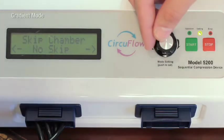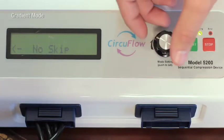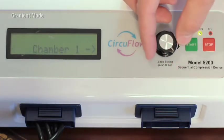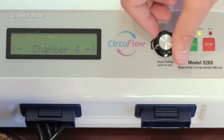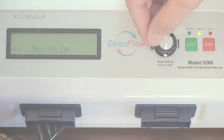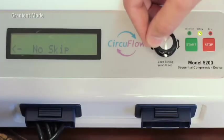To skip pressure in a chamber, turn the shuttle knob to the right until you reach skip chamber and press the shuttle knob to select. Select the chamber you wish to skip by turning the shuttle knob to the left or right. You can select chambers 1 through 4, or a fifth option: no skip. You can only skip one chamber during treatment. Note that when a chamber is selected to be skipped, a small amount of air may still enter — this is normal. Press the shuttle knob to confirm the skipped chamber.